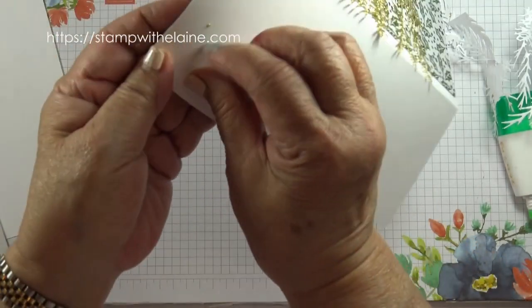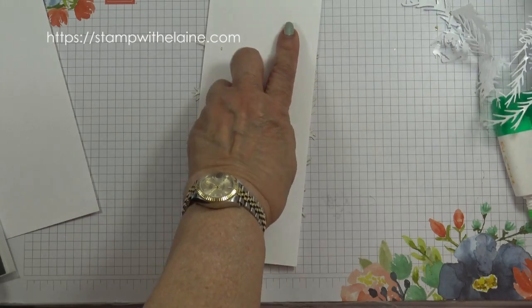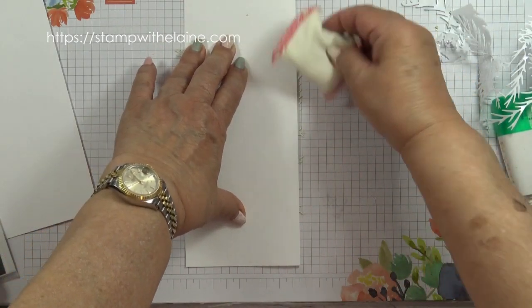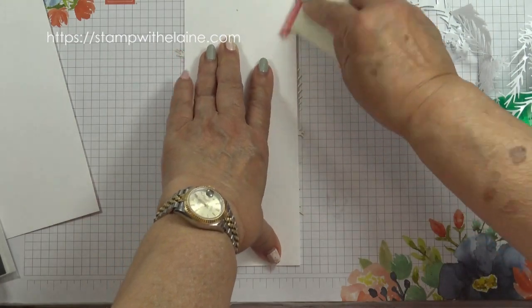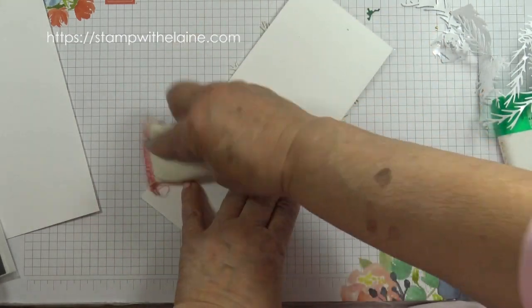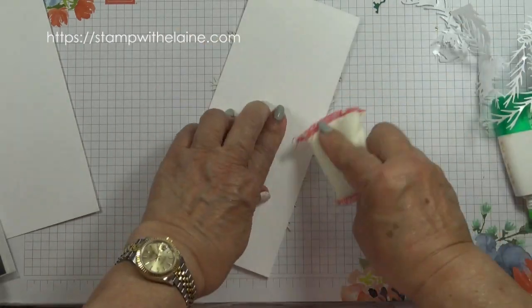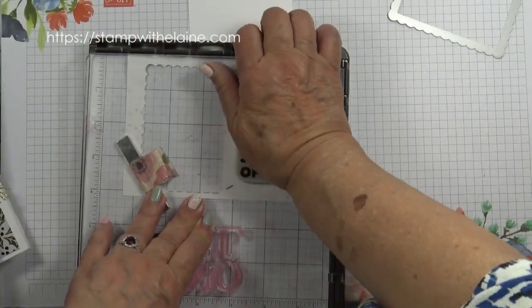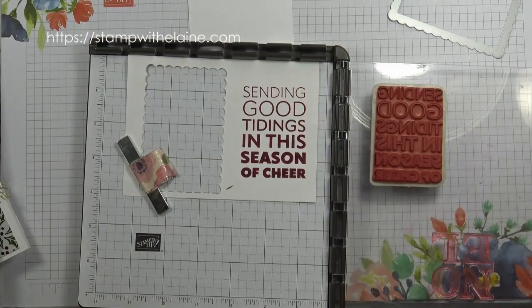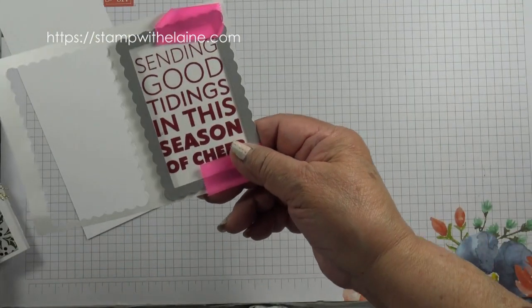So what you do is you get the embossing buddy and just tap it on the bits that are sticking out, and that stops it from being sticky. I'm going to stamp the sentiment on a basic white cardstock and I'll die cut that off camera.